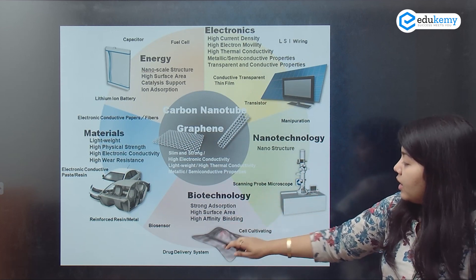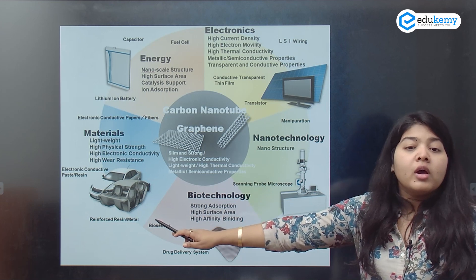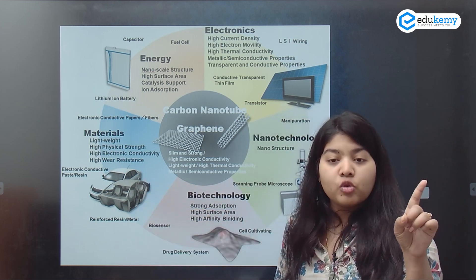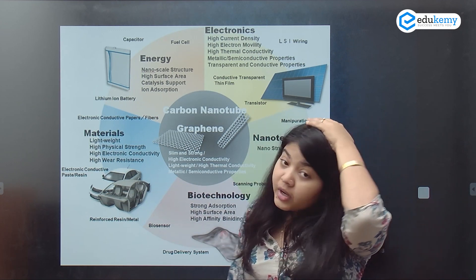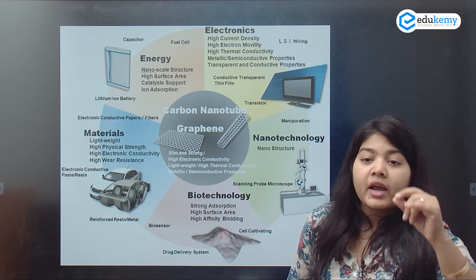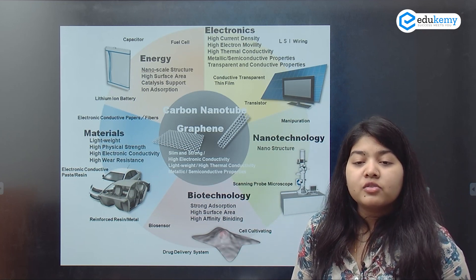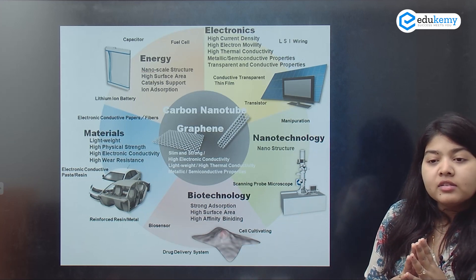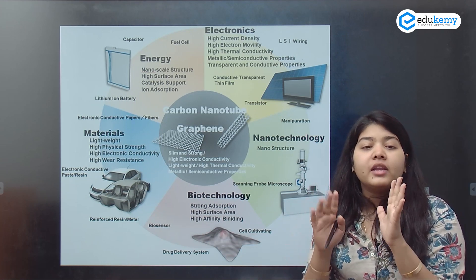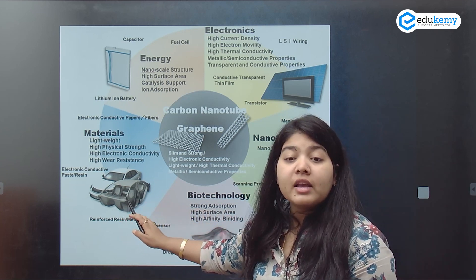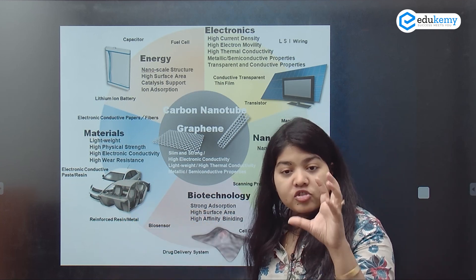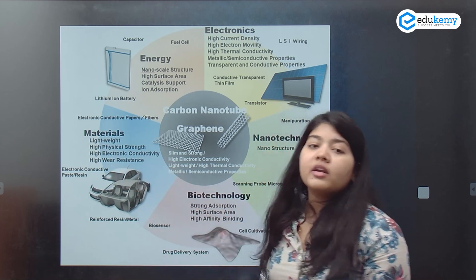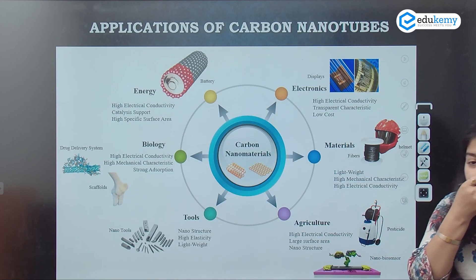Multi-walled carbon nanotubes are also used in making cars — companies use nanoparticles to provide a proper coating for shine and to make surfaces dust-free. Nanoparticles are used in tires, structure, and rims, giving better physical strength, high electronic conductivity, and high wear resistance.